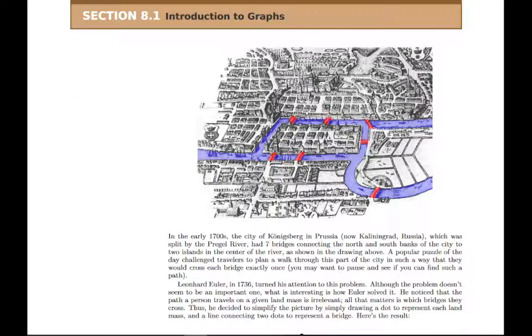To introduce this, there's a story from the 1700s where people would try to traverse a city by crossing bridges exactly once. It's a little puzzle that people would try just for fun, and you can try this yourself. You can see if you can find a path through these sections of the city by crossing each bridge exactly once.